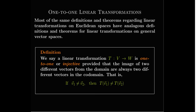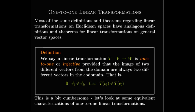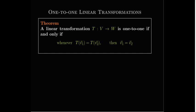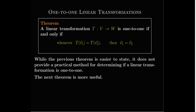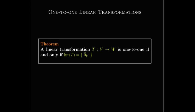That definition wasn't very useful, so we found some alternatives that were more applicable. A linear transformation is one-to-one if and only if whenever the image vectors are equal, then the original vectors have to be equal as well. The most useful result is that a linear transformation is one-to-one provided its kernel only consists of the zero vector from the domain. Remember, the kernel is a subspace of the domain, so all vectors in the kernel belong to the domain.